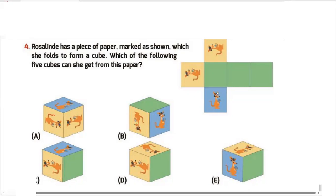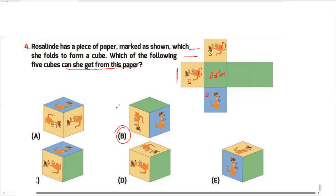Question 4: Rosalinde has a piece of paper marked as shown, which she folds to form a cube. Which of the following five cubes can she get? Looking at the net — the legs of the kangaroo image are in specific positions. When folded, this becomes the bottom, the sides fold up accordingly — one face straight, one standing, one inverted. The option that fits is option B. My answer is option B.